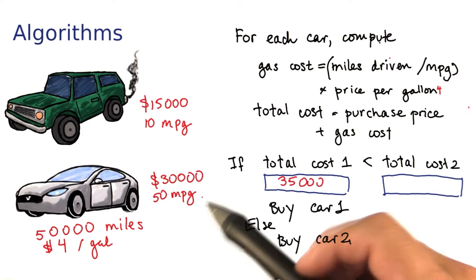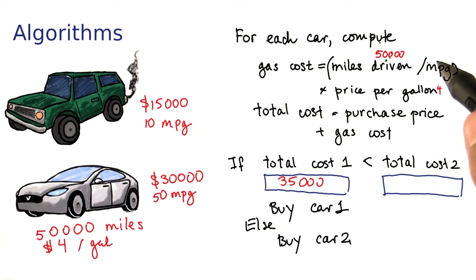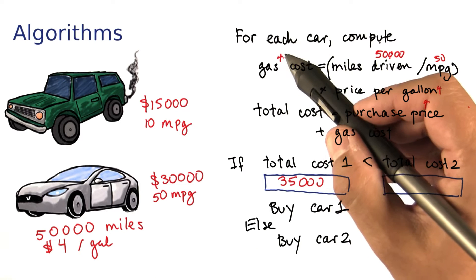With the second car, again we drive 50,000 miles. Now the miles per gallon is 50. 50,000 over 50 is 1,000 times 4, because we have $4 per gallon, which is $4,000 for the gas cost.